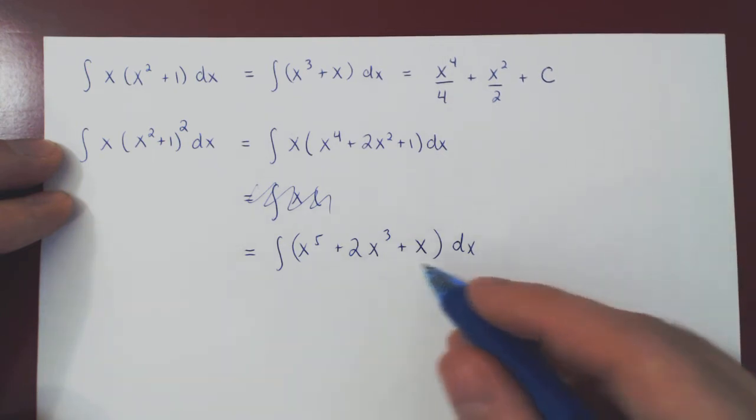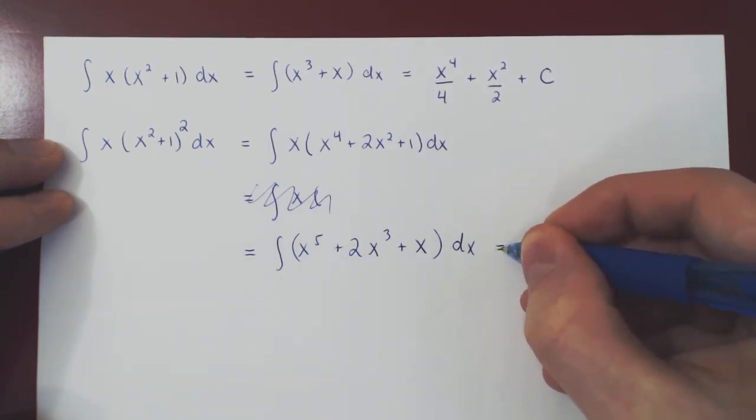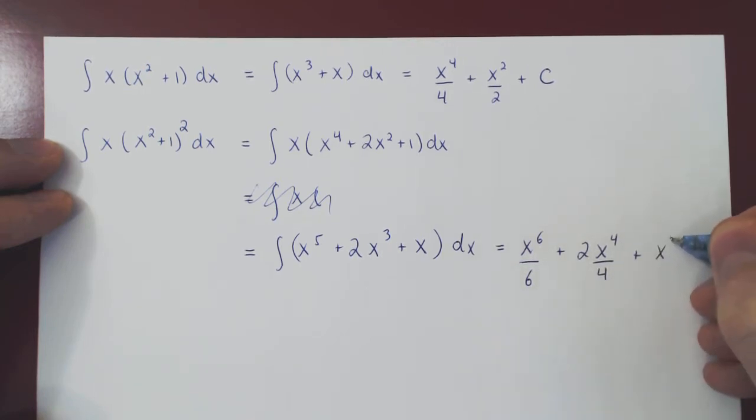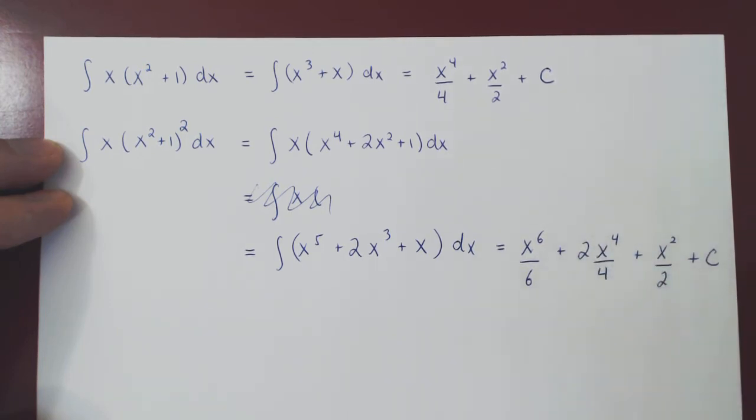We want to multiply, so we get x to the 5 plus 2x cubed plus x. And now we have a polynomial, we can use the power rule in each term, so x to the 6 over 6, plus 2x to the 4 over 4, plus x squared over 2, plus the arbitrary constant of integration c.